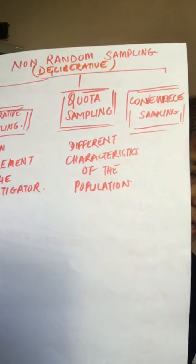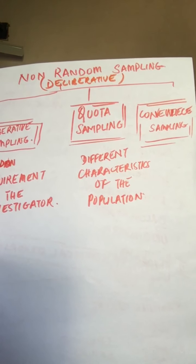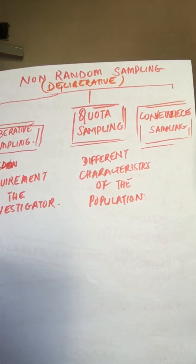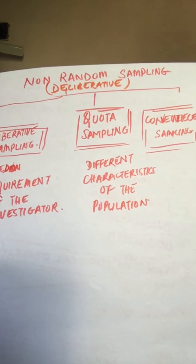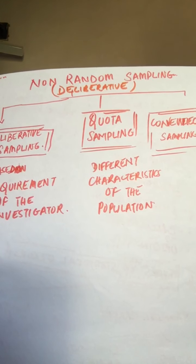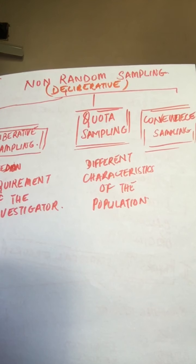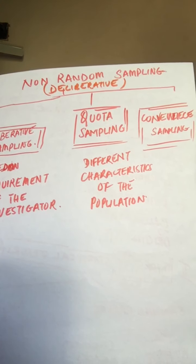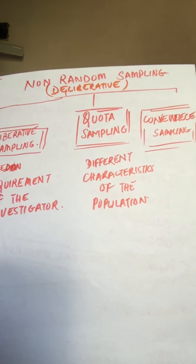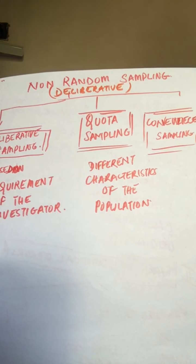There's something known as convenience sampling. This is purely according to your convenience, however you want to do it. This method is different from deliberative sampling and quota sampling.